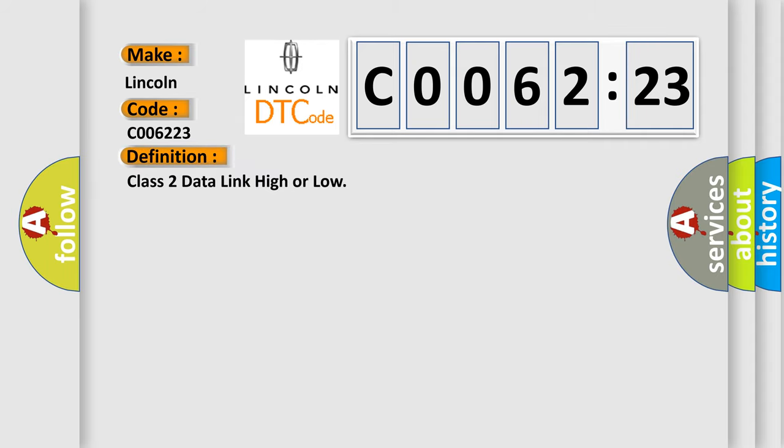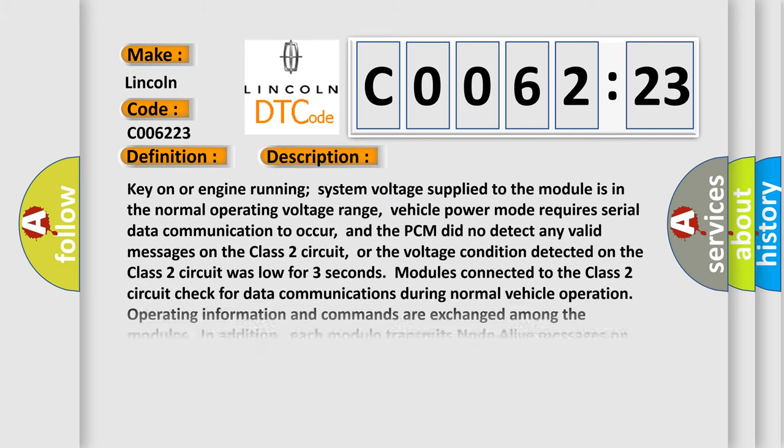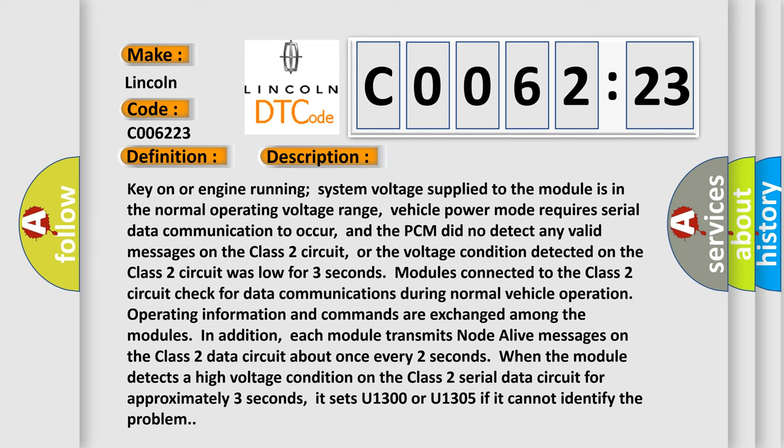Class 2 data link high or low. And now this is a short description of this DTC code. Key on or engine running, system voltage supplied to the module is in the normal operating voltage range. Vehicle power mode requires serial data communication to occur, and the PCM did not detect any valid messages on the Class 2 circuit. Or the voltage condition detected on the Class 2 circuit was low for three seconds.